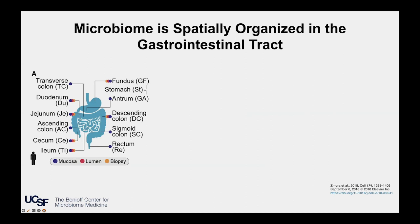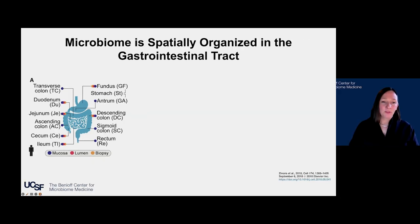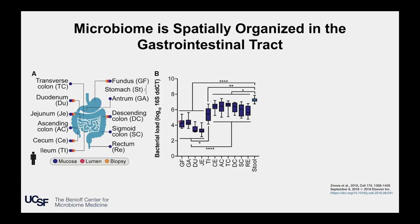Beyond that temporal evolution, we also know that the microbiome is spatially organized in the human host. In a wonderful study from Zamora and colleagues in 2018, they extensively sampled the length of the gastrointestinal tract — from the fundus, the stomach, the antrum, right down through the small intestine, large intestine, right down to the rectum. Sampling both the lining of the gut (the mucosa), the contents of the gut (the lumen), and biopsies along this tract, they found that the burden of bacteria in the upper gastrointestinal tract is much lower than that seen in the terminal ileum and the lower gastrointestinal tract — consistent with how we know the largest burden of bacteria resides in the lower GI tract.